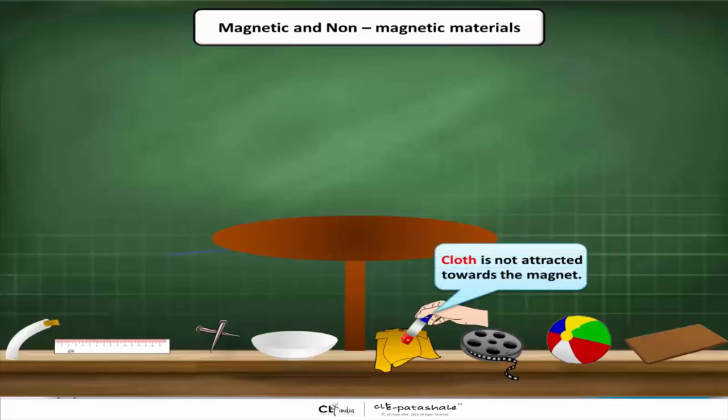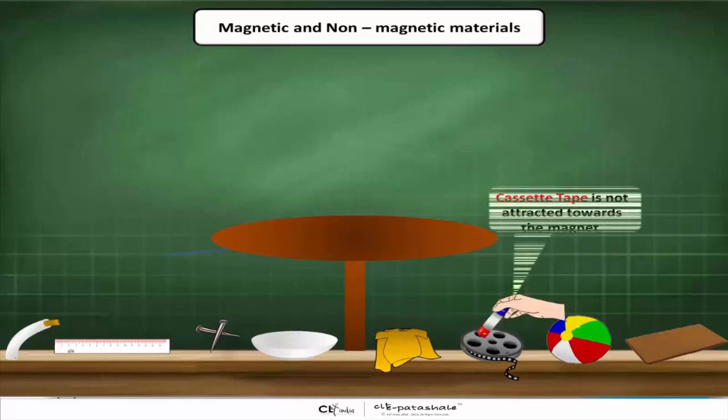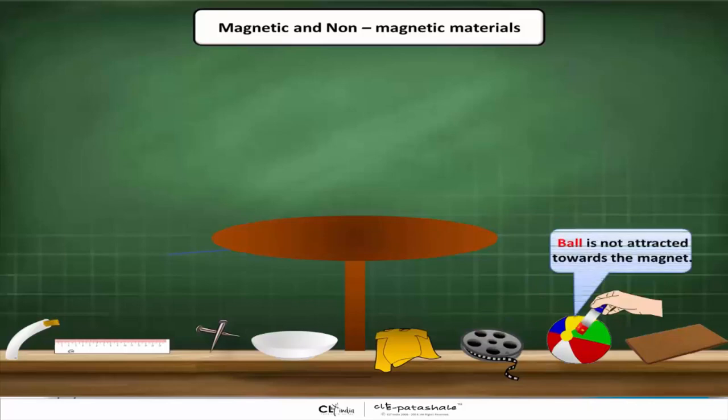Cloth is not attracted by the magnet. Cassette tape is not attracted by the magnet. Ball is not attracted by the magnet.